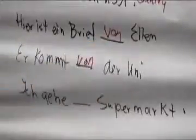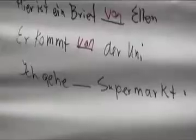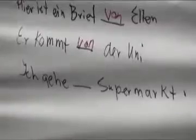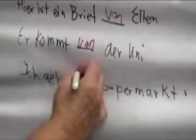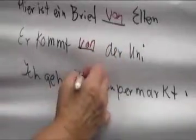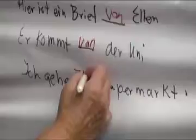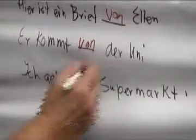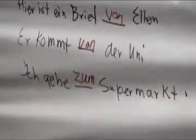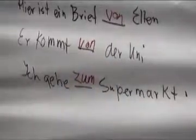And the last one: Ich gehe ___ Supermarkt — I'm going to the Supermarkt. Supermarkt is a place of business, so we use zu. And because it's a der word, we need the N: zum Supermarkt.